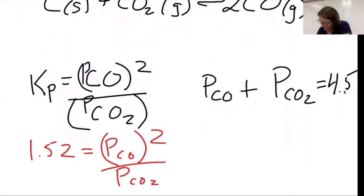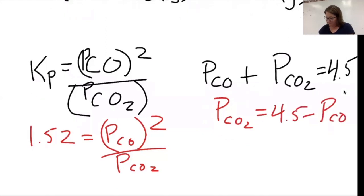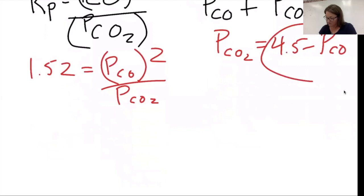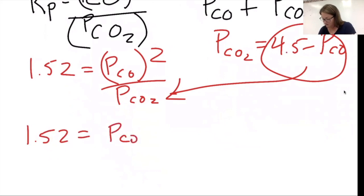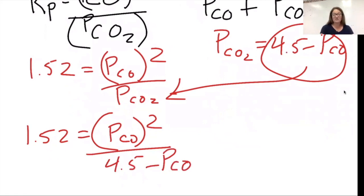So I'm going to change this to be PCO2 equals 4.5 minus PCO. And now I can substitute in that. So 1.52 equals PCO squared over 4.5 minus PCO. This is just a math problem from here.